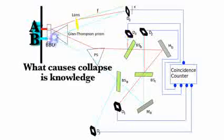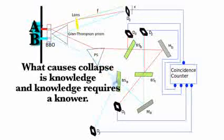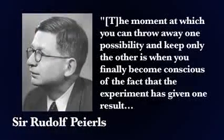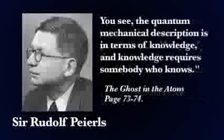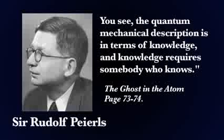See, what causes collapse is knowledge, and knowledge requires a knower. Sir Rudolph Peierls said, The moment at which you can throw away one possibility and keep only the other is when you finally become conscious of the fact that the experiment has given one result. You see, the quantum mechanical description is in terms of knowledge, and knowledge requires somebody who knows.